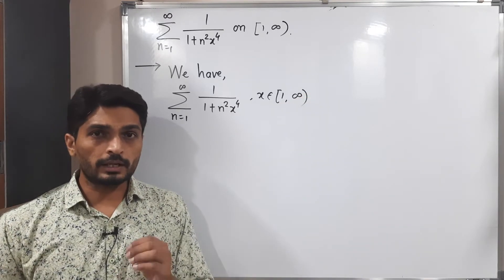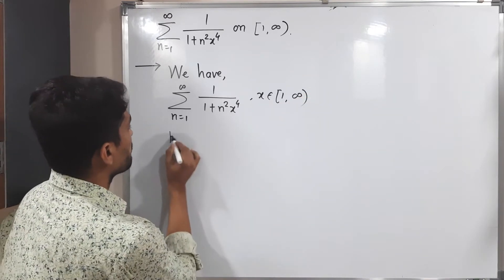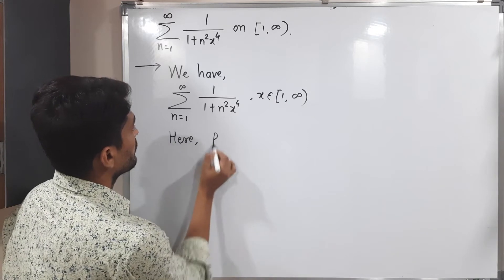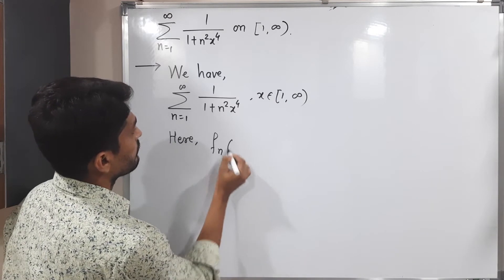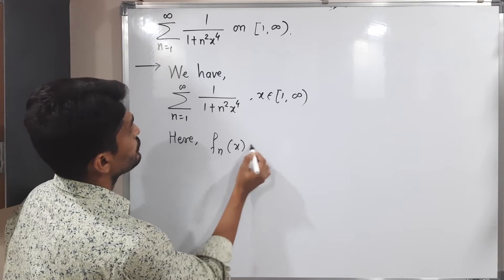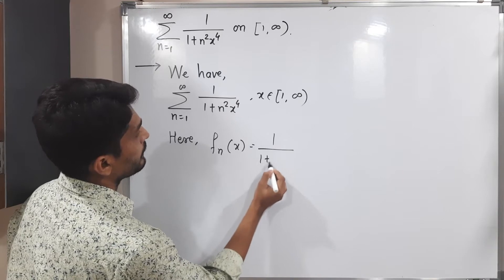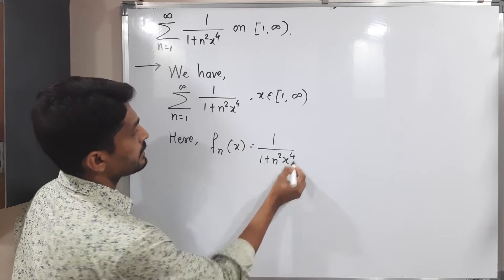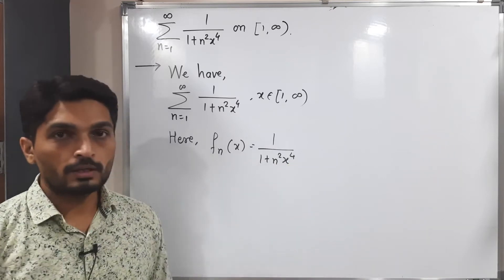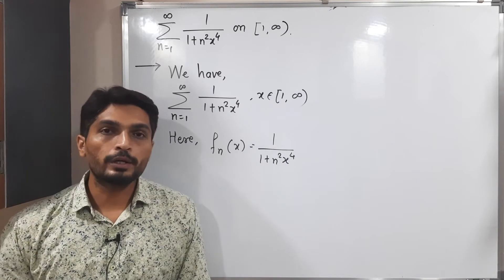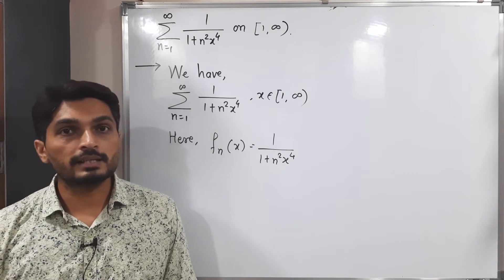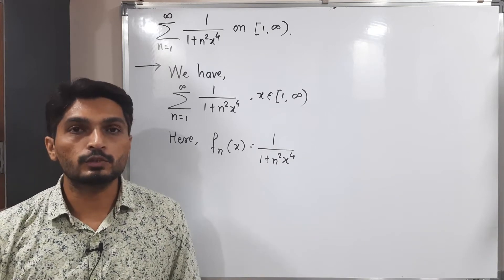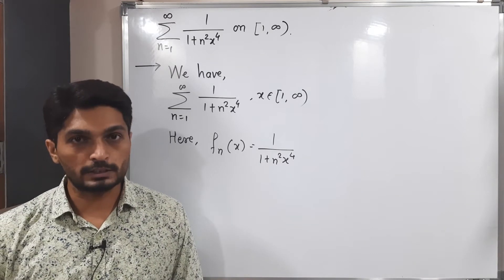Here fn(x) is equal to 1 upon (1 + n² x⁴). We are going to use the Weierstrass M-test to prove that this series is uniformly convergent.